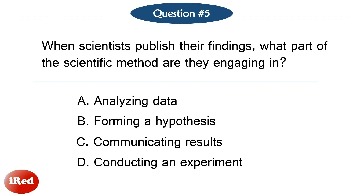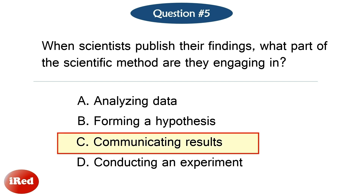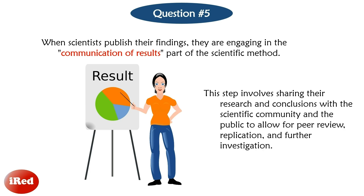Question number 6: When scientists publish their findings, what part of the scientific method are they engaging in? The correct answer is letter C. When scientists publish their findings, they are engaging in the communication of results part of the scientific method. This step involves sharing their research and conclusions with the scientific community and the public to allow for peer review, replication, and further investigation.